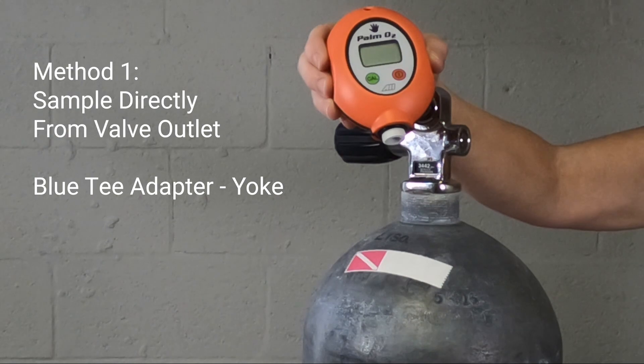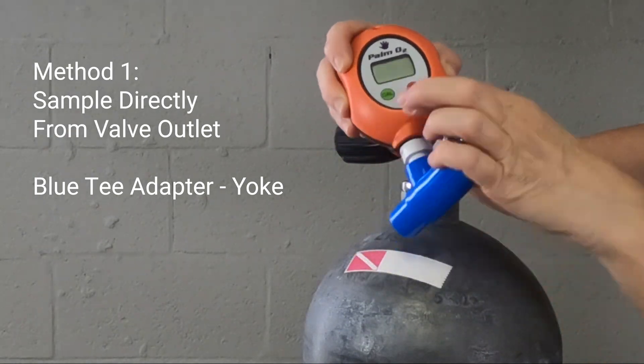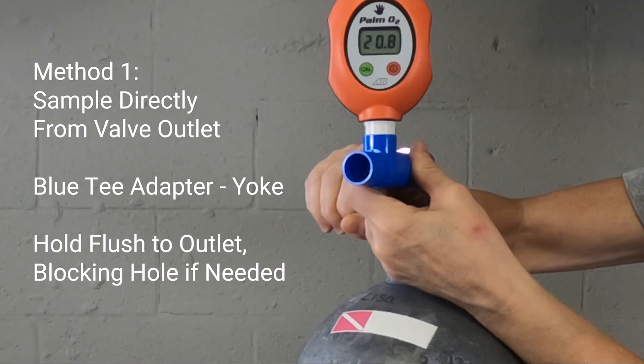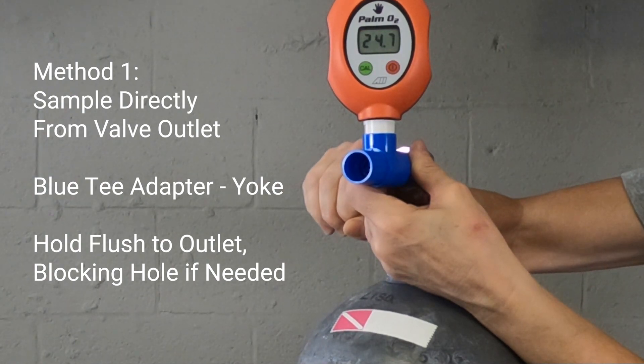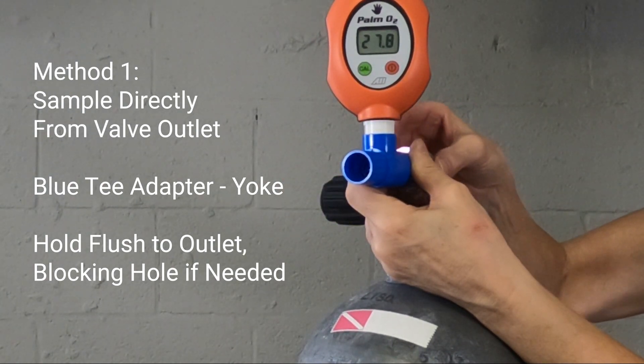Here we use the included blue T adapter by sampling from a yoke outlet. Hold the T adapter so that it is flush with the outlet and leaves no gaps.